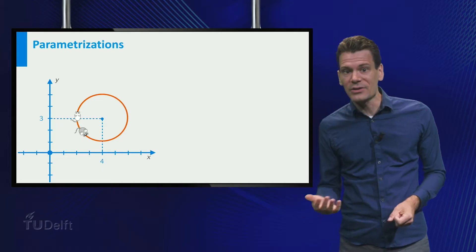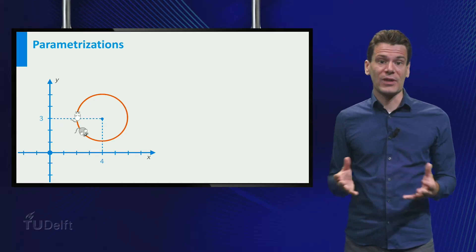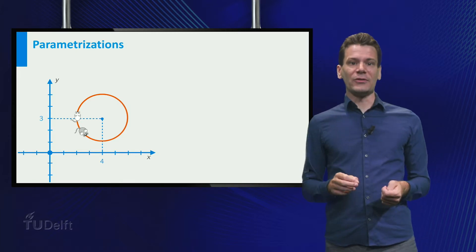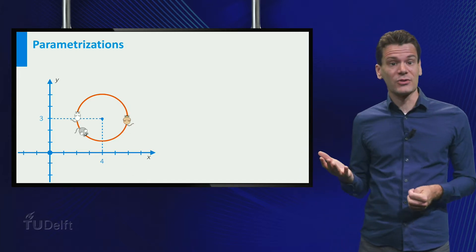A natural question to ask is: will any mouse trail do to set up a parametrization? The answer is no, some things are not allowed. Our beige mouse will give a demonstration.